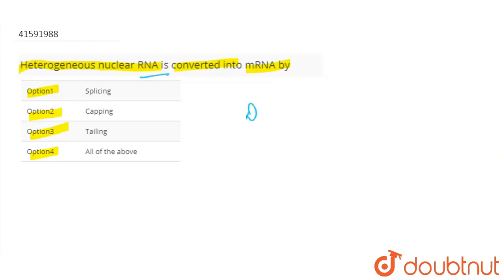So basically, how does RNA formation happen from DNA? What do you call RNA formation? Transcription, okay. In this process, post-transcription modification happens.